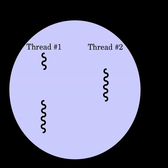Threads made an early appearance under the name of "tasks" in OS/360 Multiprogramming with a Variable Number of Tasks in 1967. Saltzer credits Viktor A. Vysotsky with the term "thread." The process schedulers of many modern operating systems directly support both time-sliced and multiprocessor threading, and the operating system kernel allows programmers to manipulate threads by exposing required functionality through the system call interface.